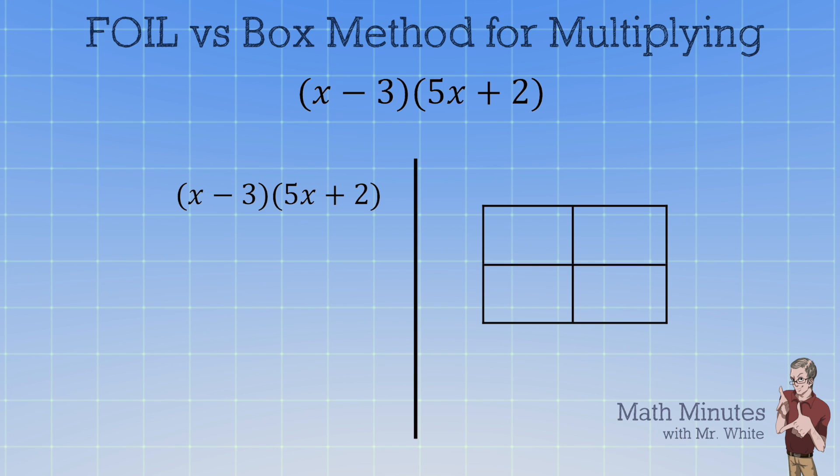Let's move on to a similar example. So (x - 3)(5x + 2). On the left side let's do the FOIL method. So we get 5x² on the F. We get 2x for the outside.